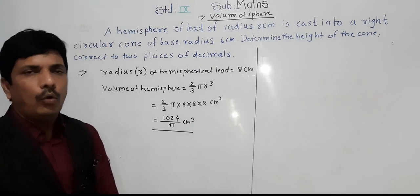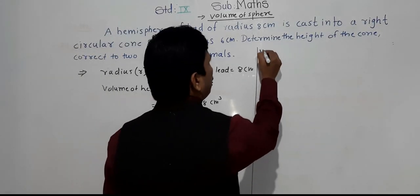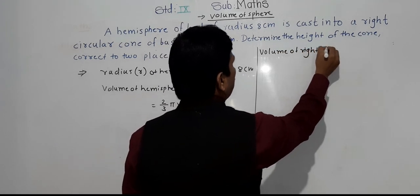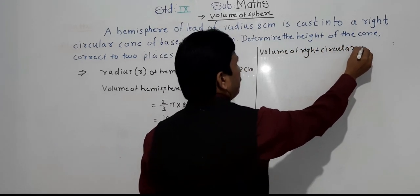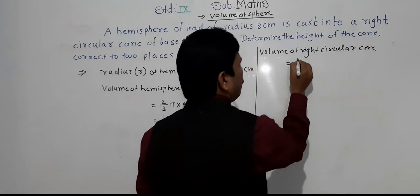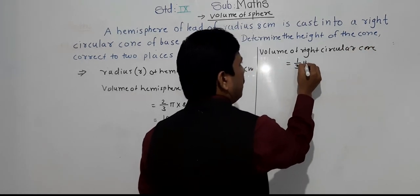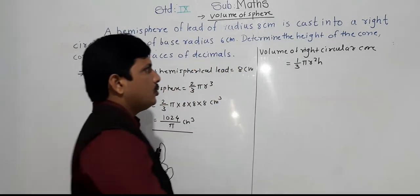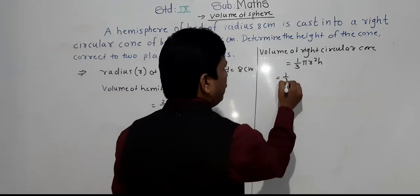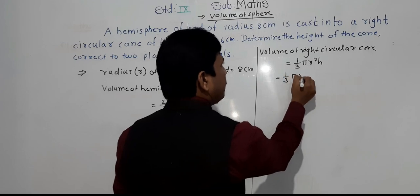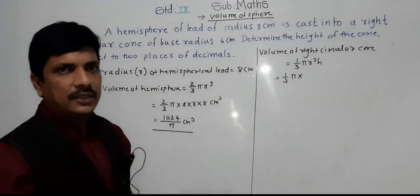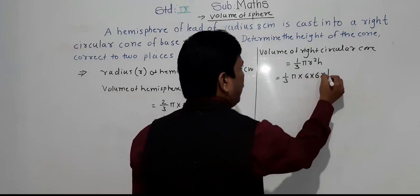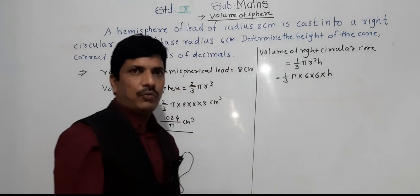We need to find out the volume of the right circular cone. Volume of right circular cone is equals to 1 by 3 pi R square H. So it will be 1 by 3 into pi multiplied by radius 6, that is 6 into 6 into H, because height we have to find out.